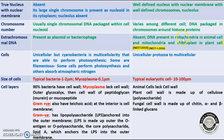In eukaryotes, DNA is present in mitochondria in animal cells, and in mitochondria and chloroplasts in plant cells. Both mitochondria and chloroplast are considered semi-autonomous organelles because they are partly dependent upon the nuclear genome but partly responsible for their own functions. They contain DNA and 70S type of ribosome.